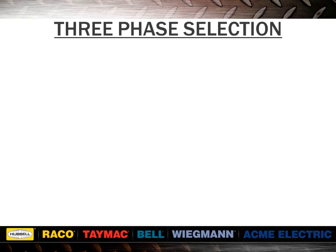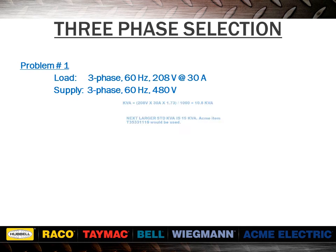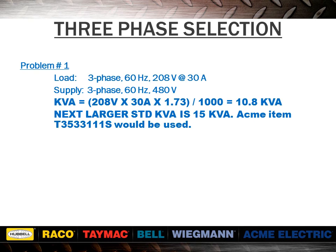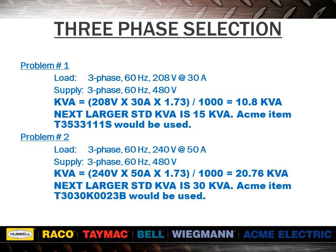Let's review two examples of three-phase selection. In problem one, the kVA requirement would be 208 volts multiplied by 30 amps, multiplied by 1.73, then divided by 1,000, giving a 10.8 kVA requirement. For this, our standard 15 kVA transformer, item number T3533111S, would be used. In problem two, the kVA requirement would be 240 volts multiplied by 50 amps, multiplied by 1.73, then divided by 1,000, giving a 20.76 kVA requirement. For this, our standard 30 kVA transformer, item number T3030K0023B, would be used.